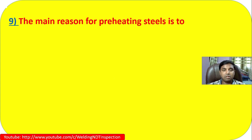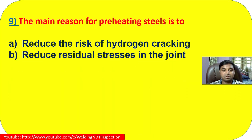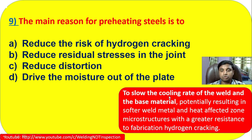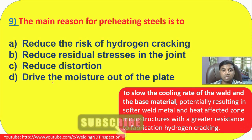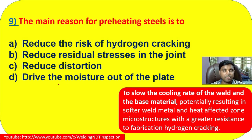Question 9: The main reason for preheating steel is to — reduce the risk of hydrogen cracking, reduce residual stresses in the joint, reduce distortion, or drive moisture out of the plate. Definitely the main reason is to reduce hydrogen cracking. Preheating slows down the cooling rate of the weld, resulting in a softer weld metal and heat-affected zone microstructure with greater resistance to fabrication hydrogen cracking. Answer is A.